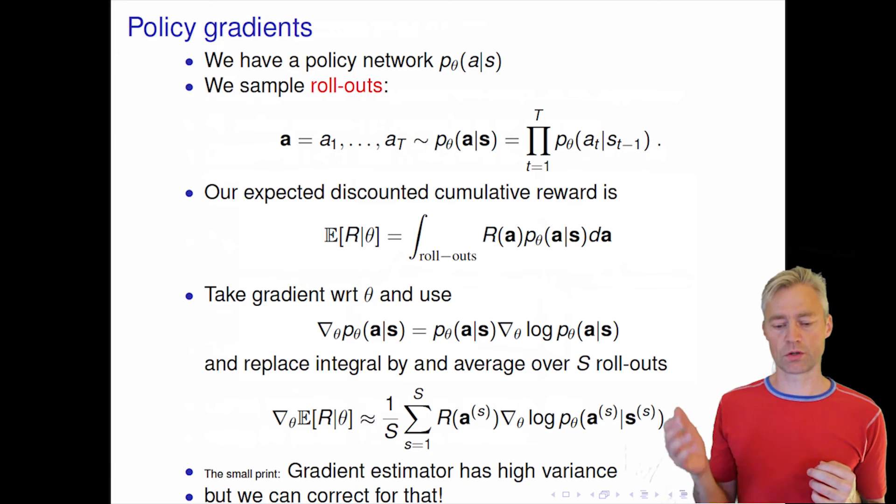So it's a plus or minus one depending on whether we win or lose, and then we multiply that by the gradient of the log of these probabilities of the different actions.